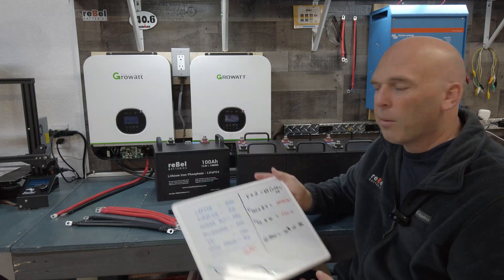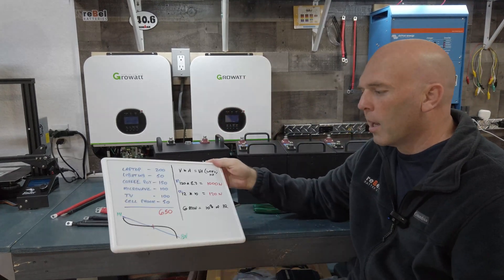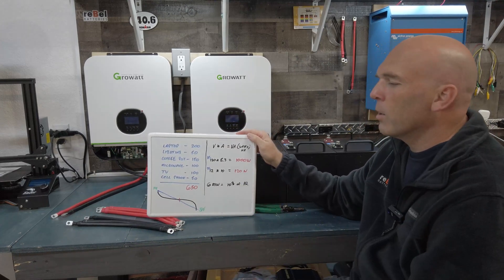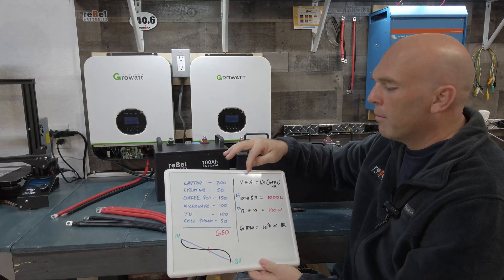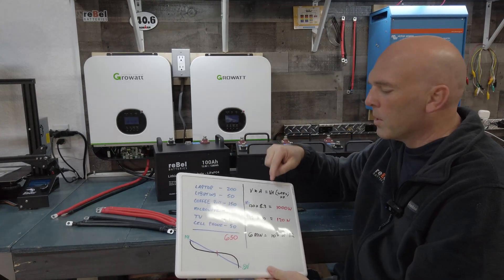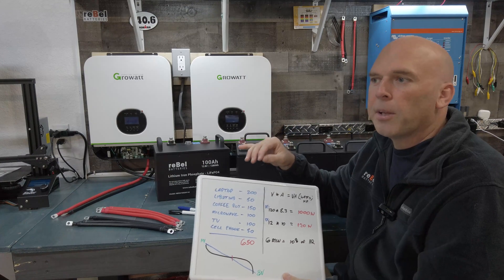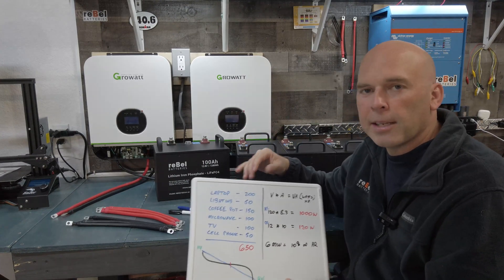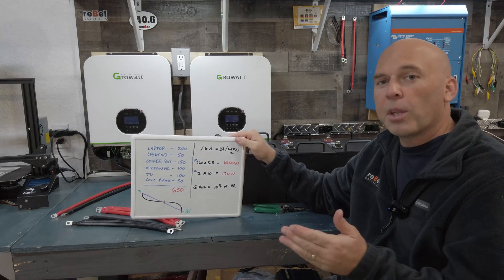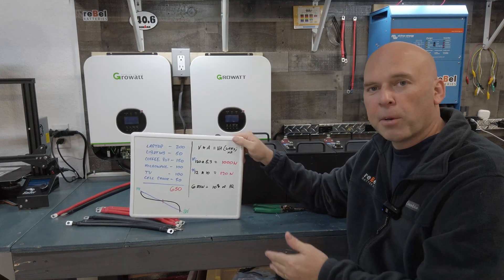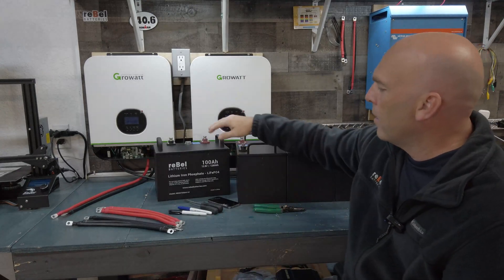Once you have that number — 650 watts per day — you can size your battery bank, your inverter, and figure out how many solar panels you need. Build an Excel or Google sheet with columns for volts, amps, watts, duty cycle percentage, and hours per day running. You can have a winter version and a summer version since needs vary seasonally. That's how you grow your estimate into a real system plan.